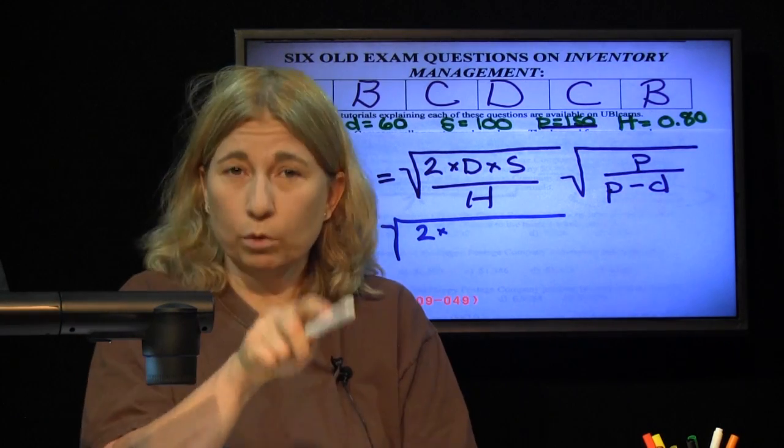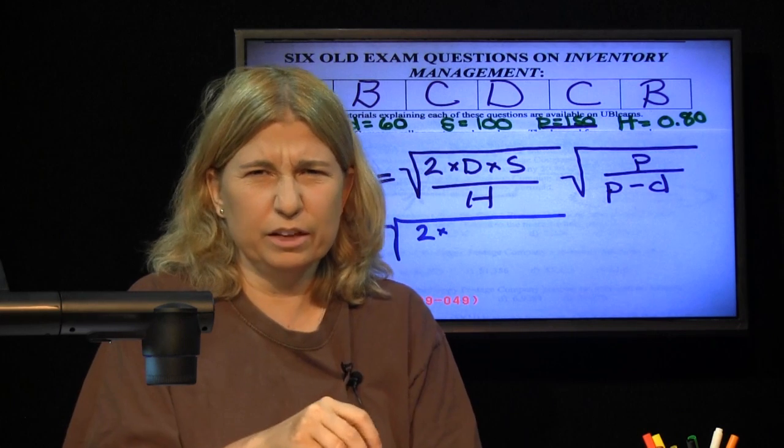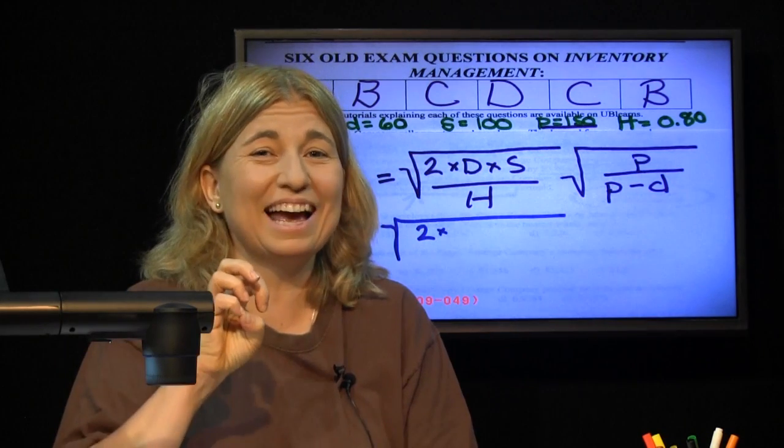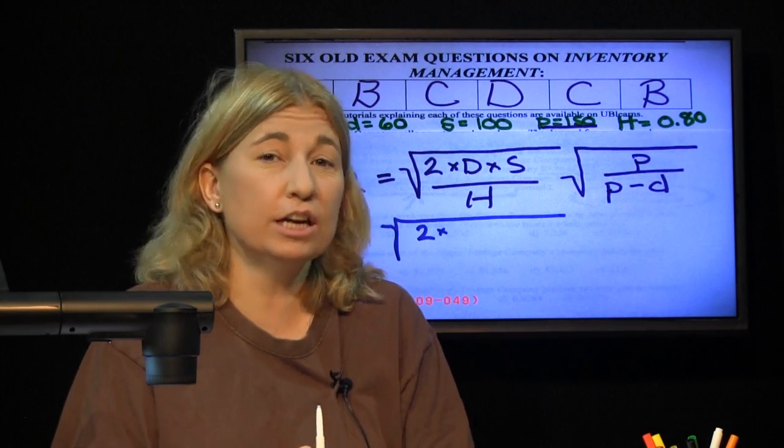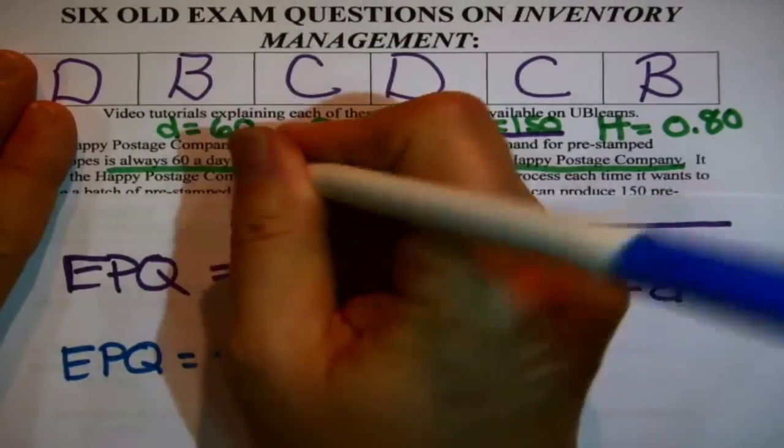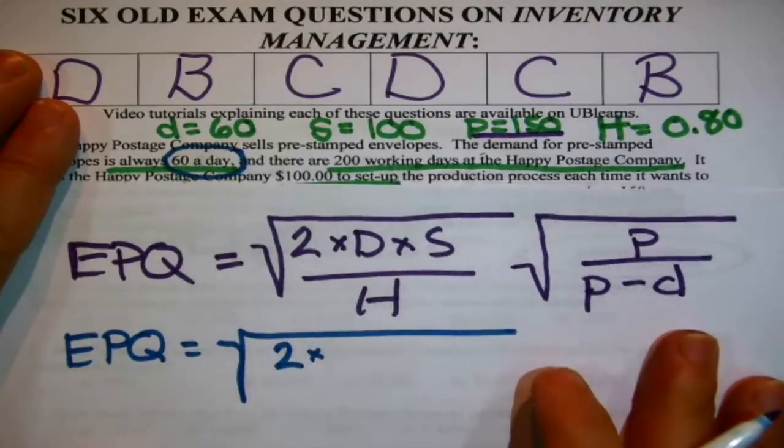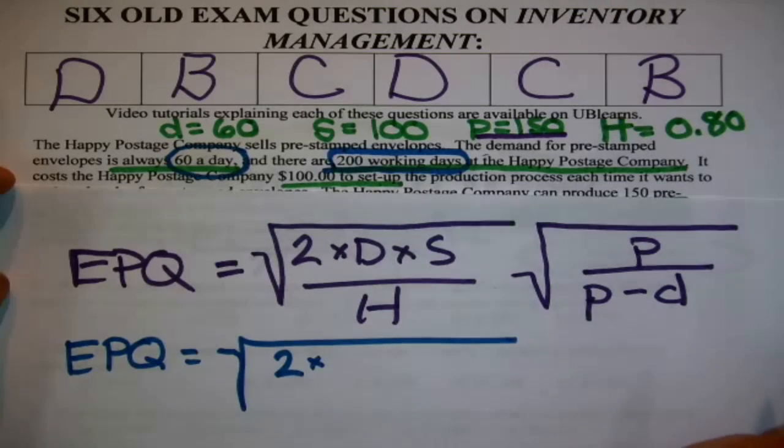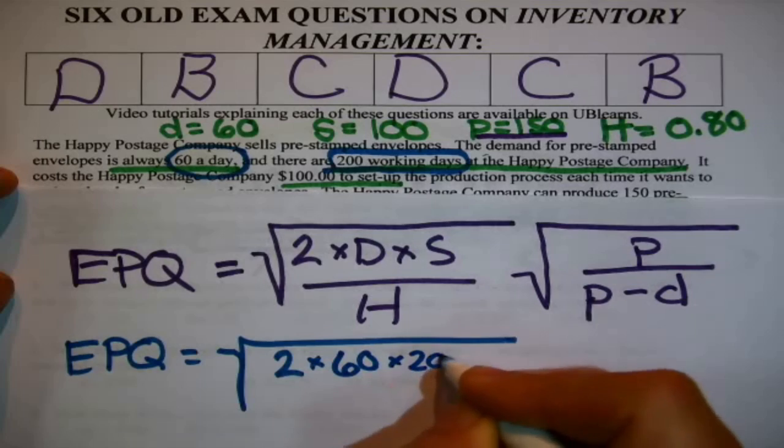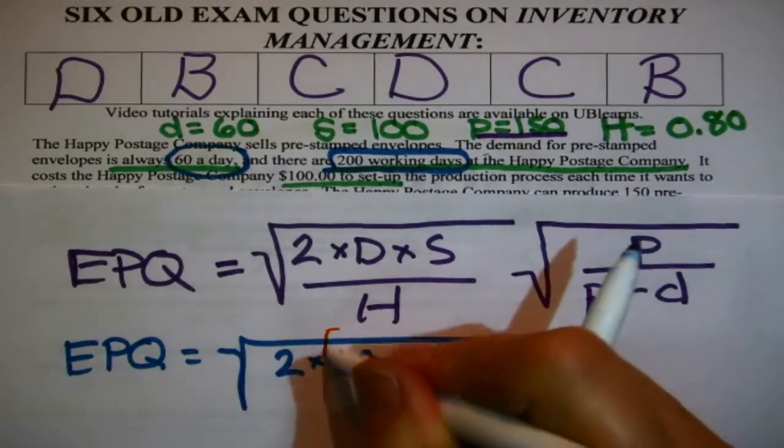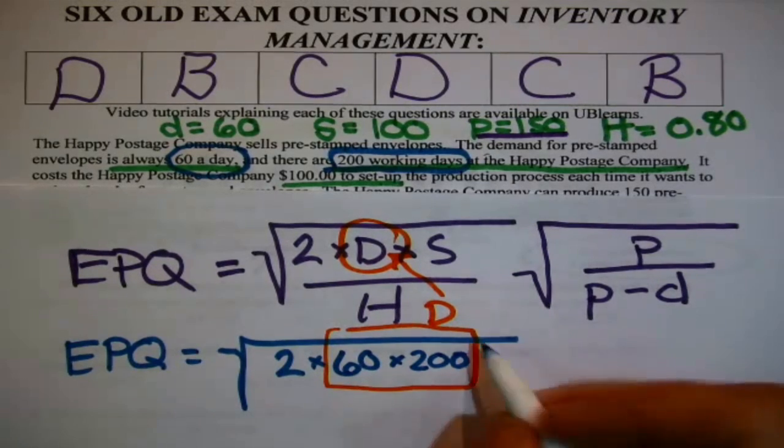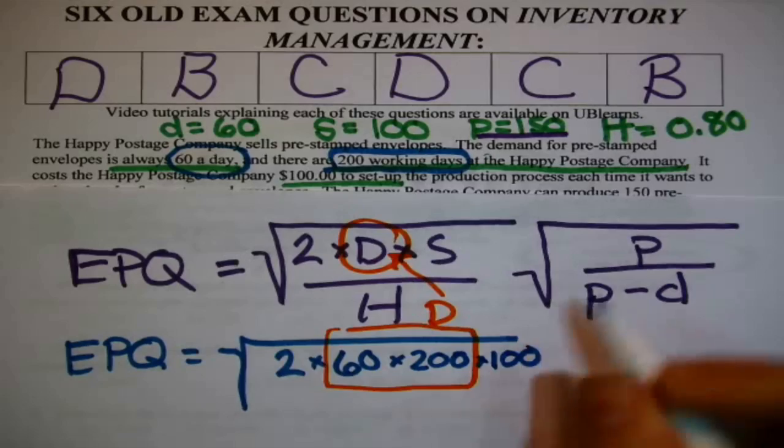EPQ equals the square root of 2 times... I didn't get very far with the formula, although I thought I had all the pieces. If you got stuck on this one, this might be the reason. Capital D in chapter 10, all those formulas, capital D is always annual demand. How many do you need in a year? This D is daily. How many did they say they needed in a year? They didn't say, but I figured we were going to use that information for something. There's 200 working days. 60 times 200, that would be how much you needed in a year.